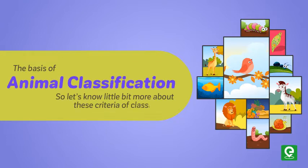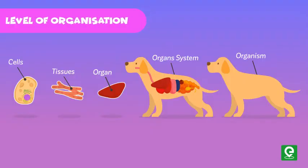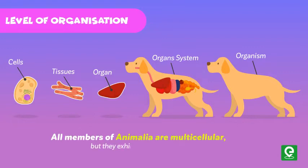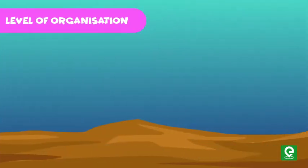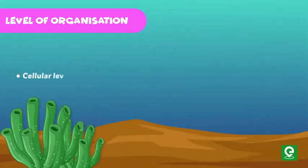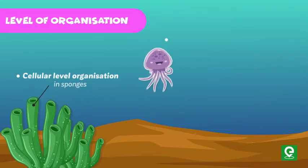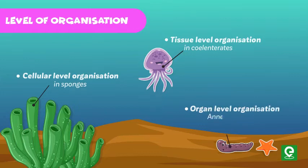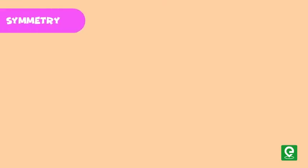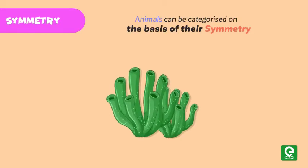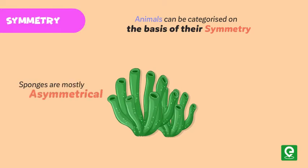Let's learn about the criteria of classification. Level of organization: all members of Animalia are multicellular, but they exhibit different patterns of cell organization — such as cellular level organization in sponges, tissue level organization in cnidarians, and organ level organization in annelids and other higher phyla.